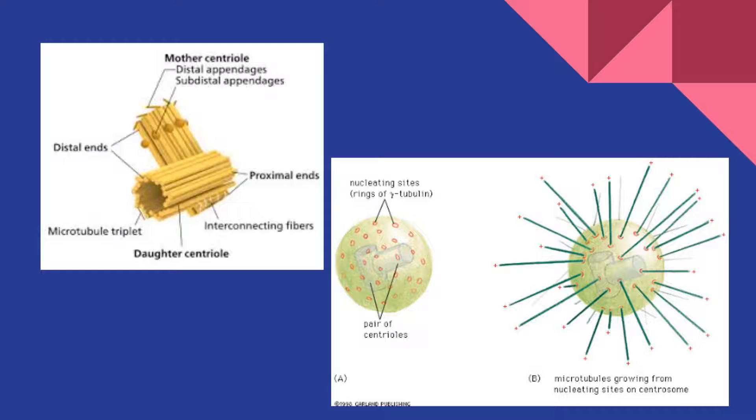Centrioles are perpendicular cylindrical-shaped organelles that are surrounded by a matrix of rings of tubulin, which is what microtubules are made of. These rings form nucleation sites, where microtubules attach and form.